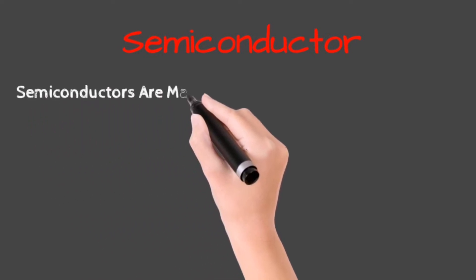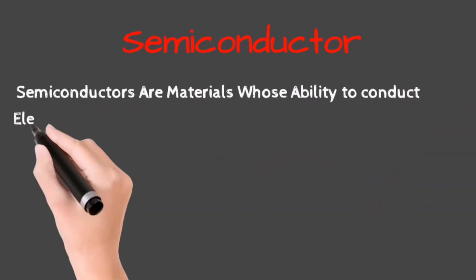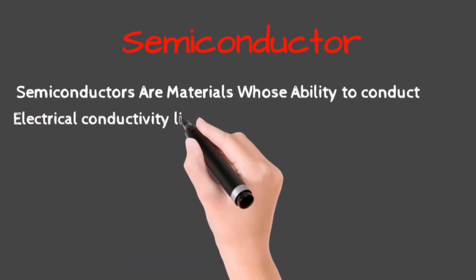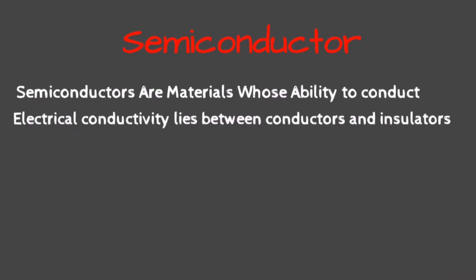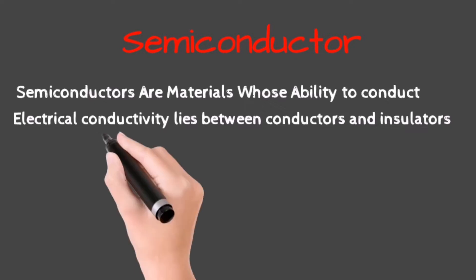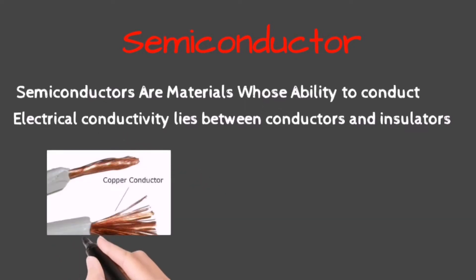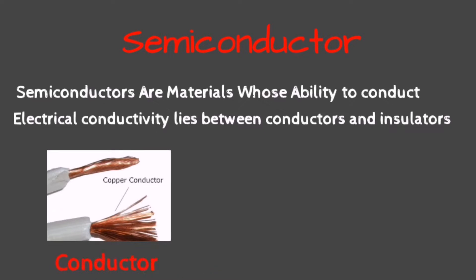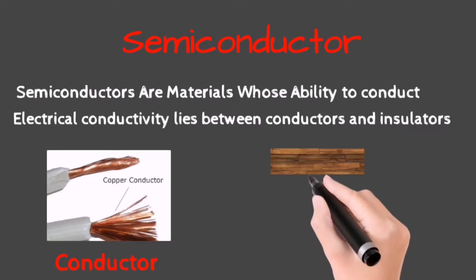Hello friends, in this video we are going to learn about semiconductors. Semiconductors are materials whose ability to exhibit electrical conductivity lies between conductors and insulators. Conductors basically possess good electrical conductivity, while insulators are those materials whose electrical conductivity is poor.